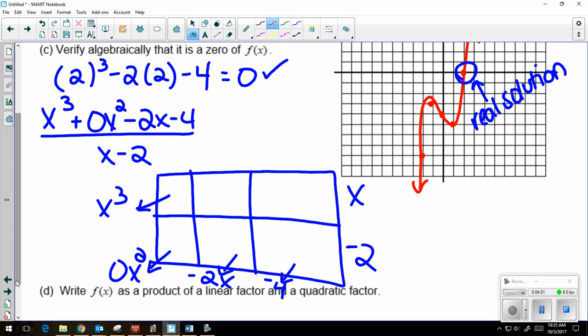I always start in the top left. So this is an x cubed. So what times x gave me x cubed? x squared. Once I have a top piece, I multiply. x squared times negative 2 is a negative 2x squared. This diagonal has to add to give me 0x squared. So that means that up top has to be a positive 2x squared. So what times x gives me 2x squared? A positive 2x.